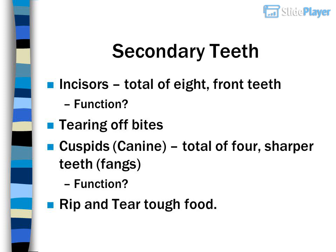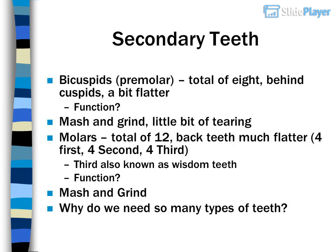Cuspids rip and tear tough food. Bicuspids, or premolars — a total of 8 — located behind the cuspids, a bit flatter. Function: mash and grind, with a little bit of tearing.